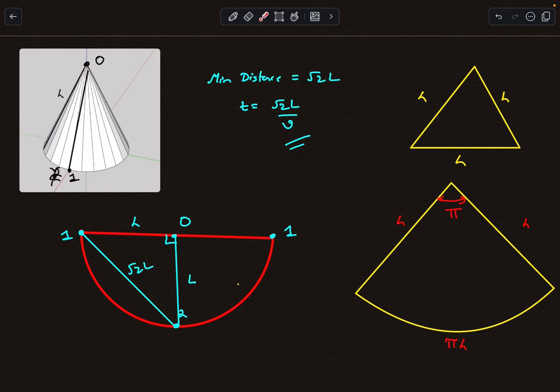If you want to visualize it in 3D, the ant will cover the distance something like this, where the length of this segment will be √2L, which is represented by this √2L.